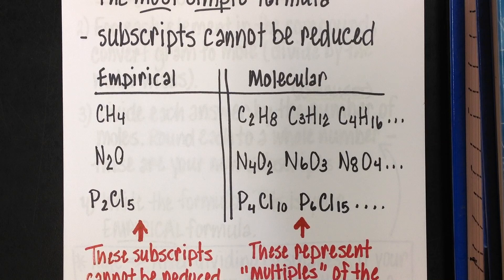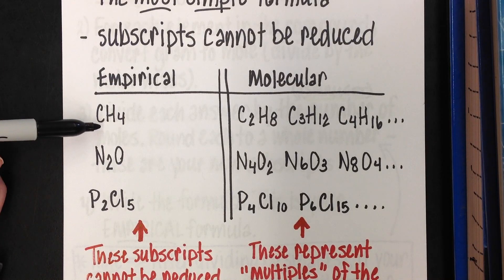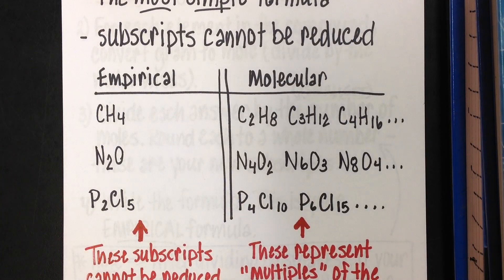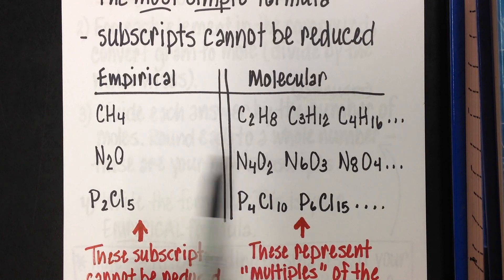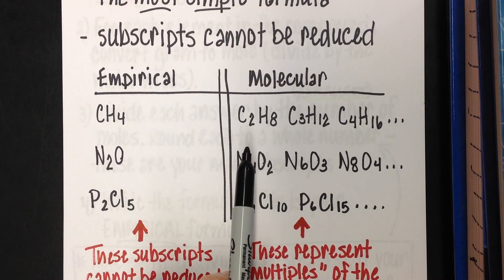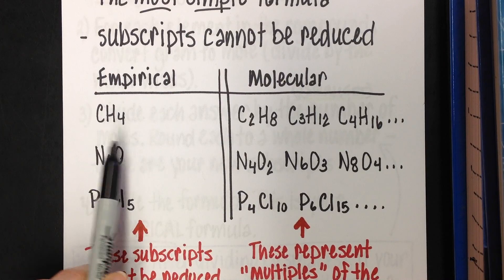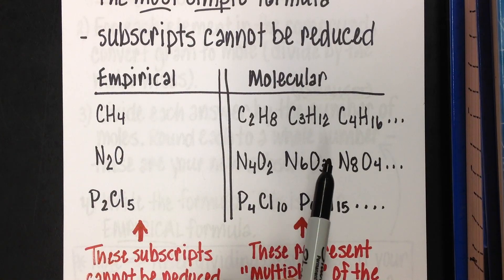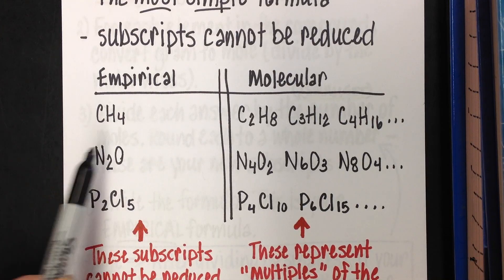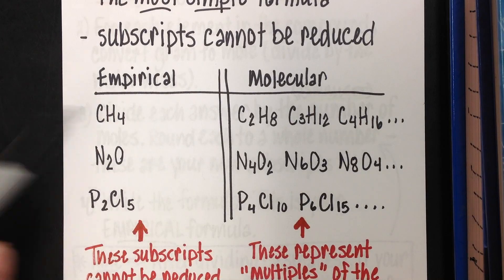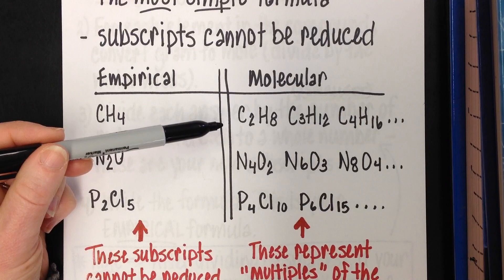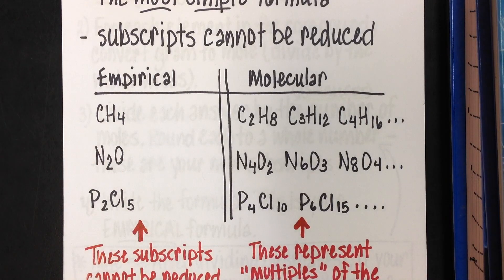Molecular formulas will be covered in the next lesson. CH4 would be an empirical formula because the subscripts 1 and 4 cannot be further reduced — that's the smallest: 1 carbon to 4 hydrogens. Some molecular formulas for that empirical formula would be C2H8 (multiply each subscript by 2), C3H12 (multiply by 3), or C4H16 (multiply by 4). This empirical formula represents all of these molecular formulas, and there could be more depending on the multiple.